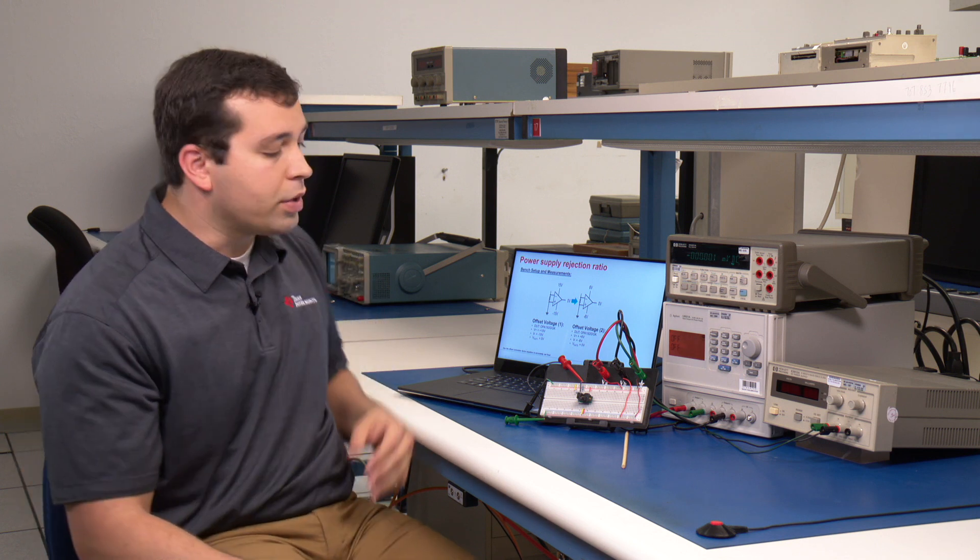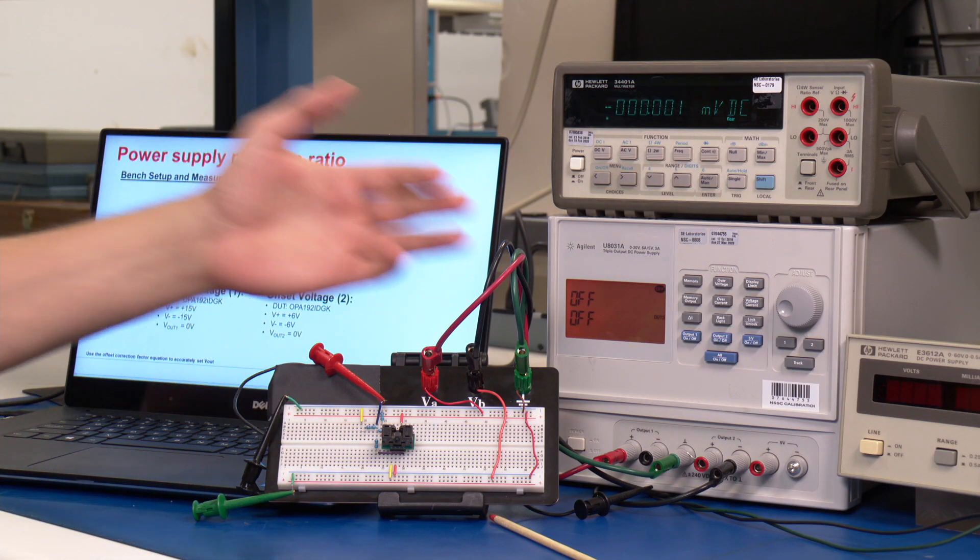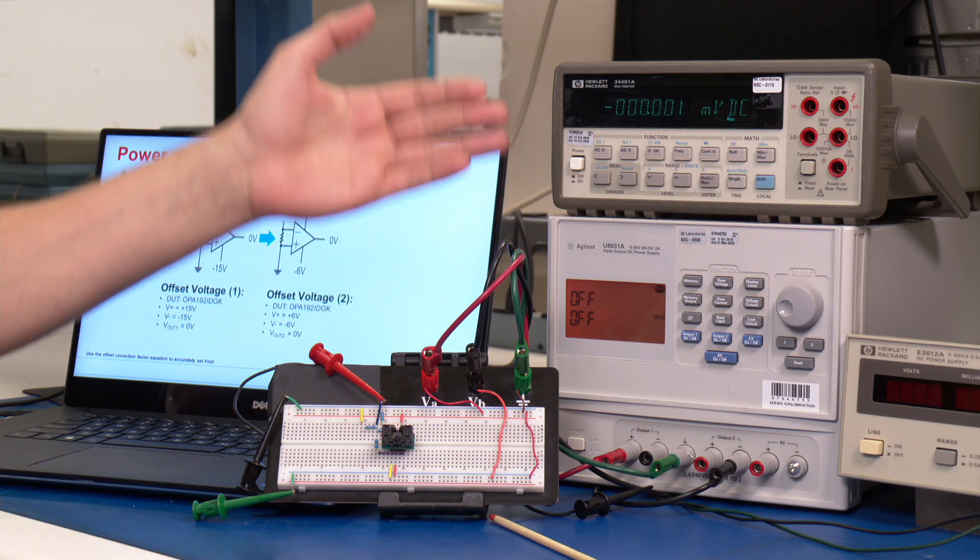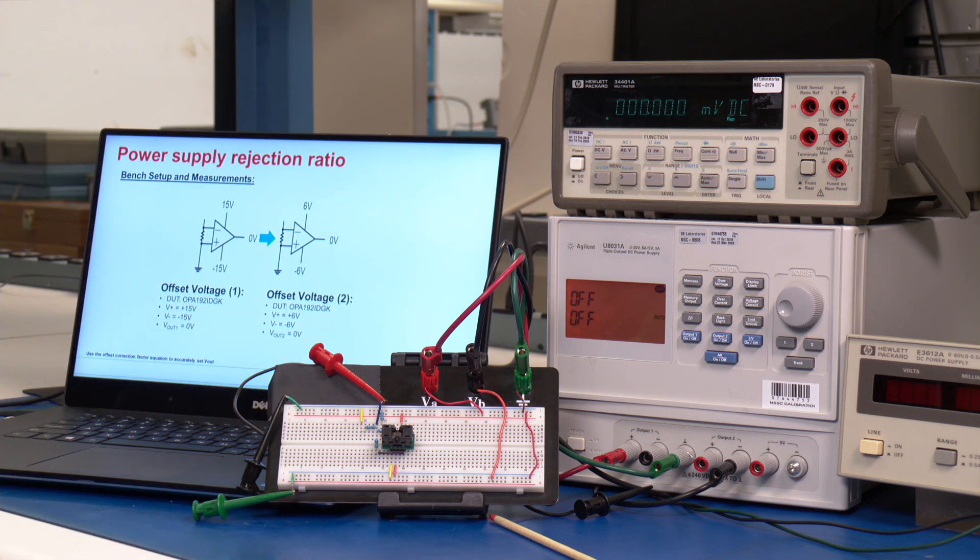Now let's verify how to measure PSRR of an OPA 192. In this example, we'll use a universal prototyping board, otherwise known as a breadboard. In addition, we'll use a power supply and a digital multimeter to read the output voltage of the false summing junction circuit.